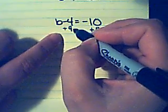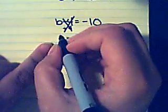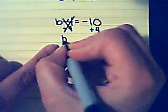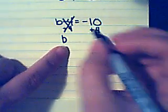The minus four and the plus four cancel each other out. So I've got the b on one side of my equation all by itself.